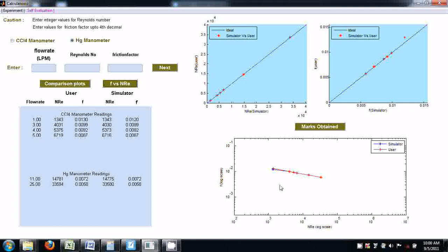This is the sample graph for F versus NRE on log-log scale. The actual plot should be of this, and the student got this plot. This is the user plot—it's almost coinciding, so his values are almost near.